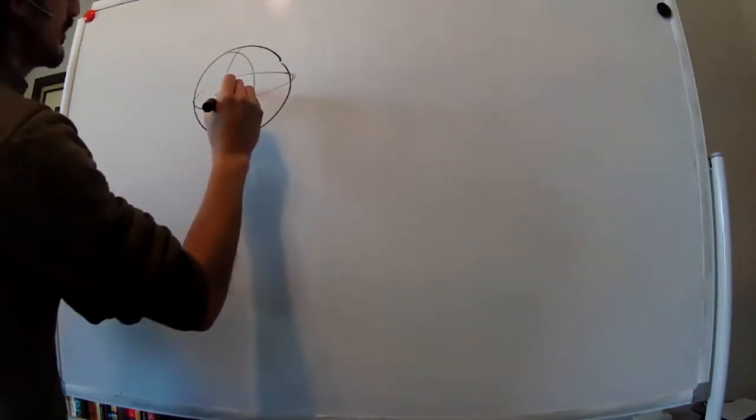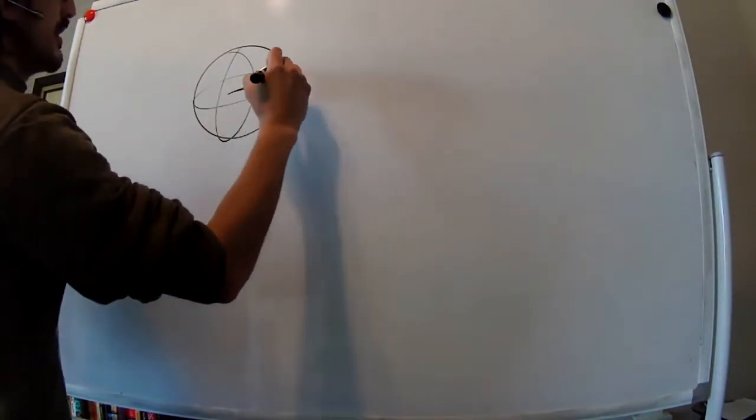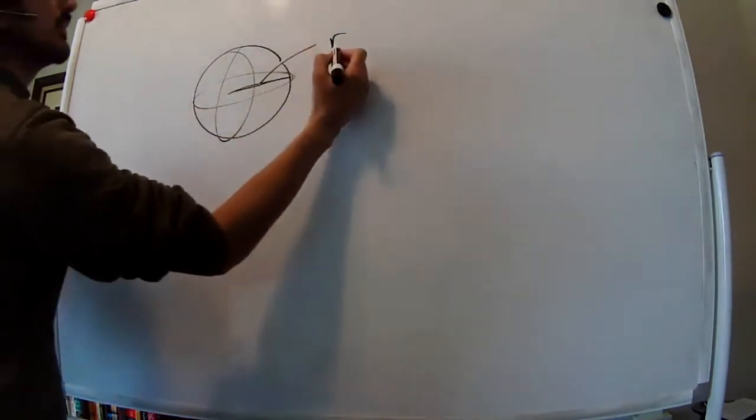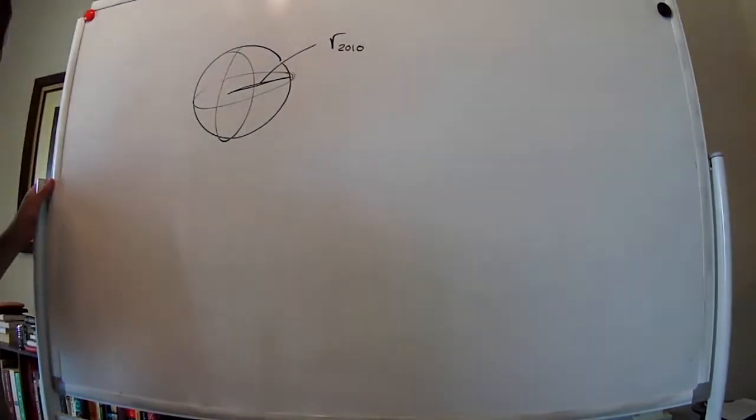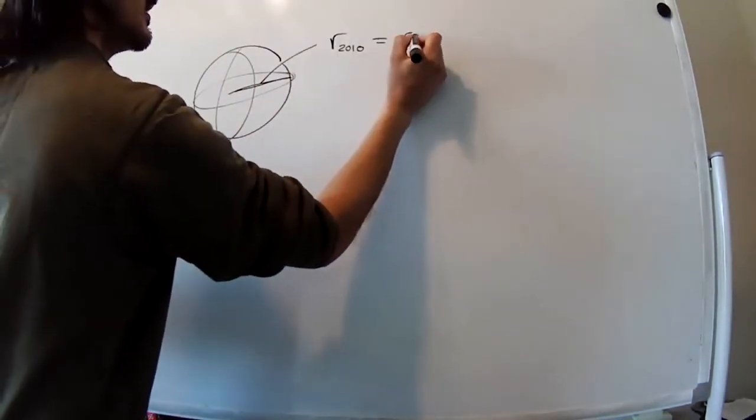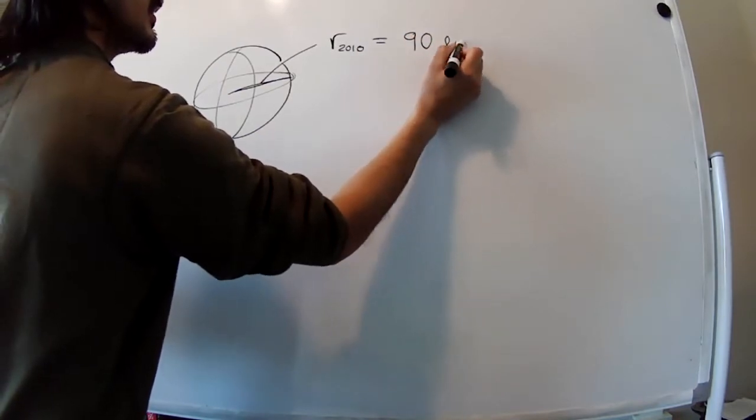There's going to be a radius, right? So the radius, and I'm going to call it radius in 2010. The radius in 2010 is 90 light years.